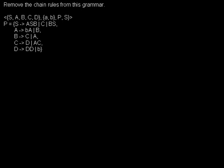I'd like to show you how to remove chain rules from a grammar, maybe in order to produce a Chomsky normal form. Chain rules are where you have any non-terminal on the left-hand side and exactly one non-terminal on the right-hand side.